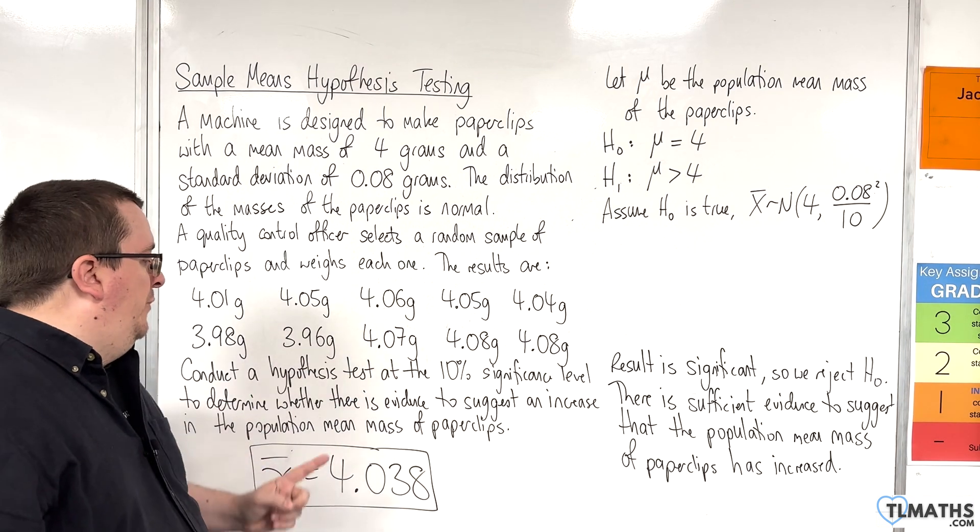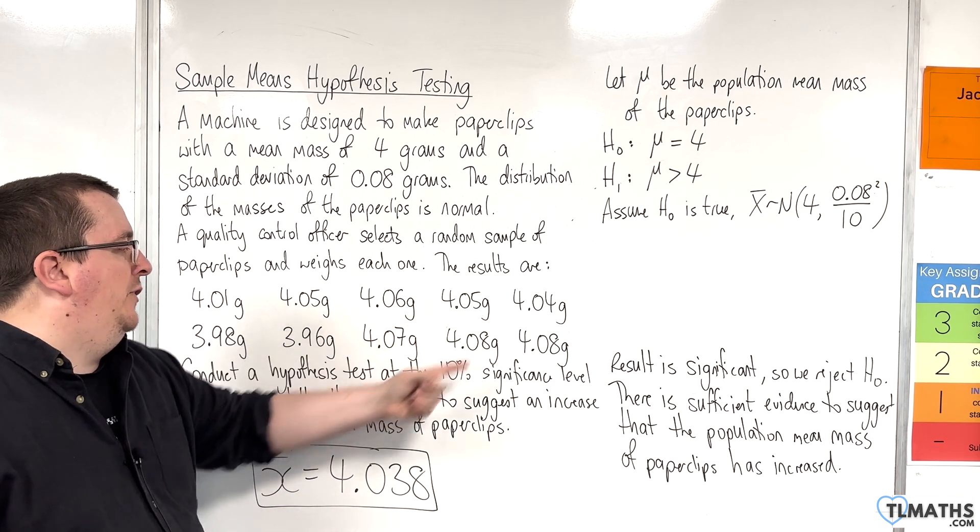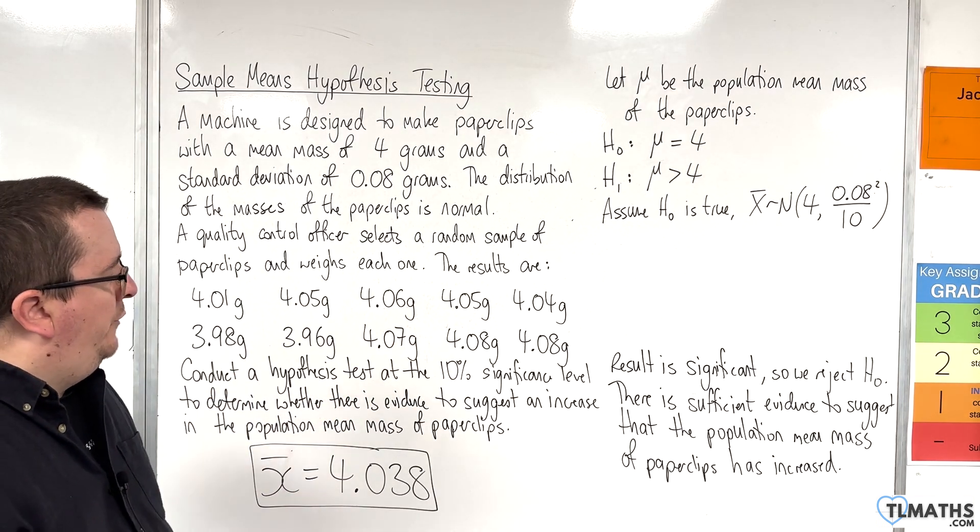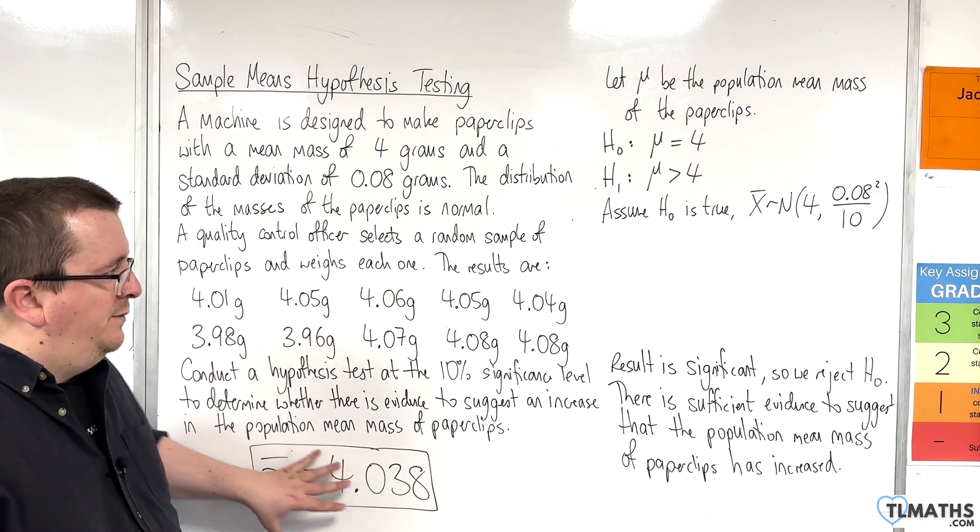Now, in the previous video, we also worked out the sample mean, because we have this sample of 10 masses, so we know that's 4.038, so I've just made a note of that there.